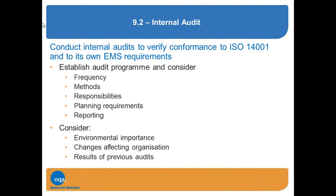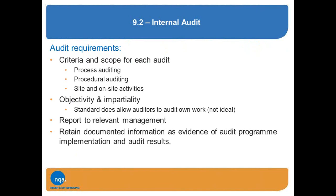Internal audits — other than a change of numbering, these are broadly as we are now. You establish an audit programme, considering the environmental importance of the areas being audited, any changes that may have occurred and the results of previous audits. There are obviously different ways you can audit — for instance, process auditing where you may have a particular manufacturing process.